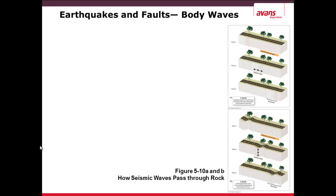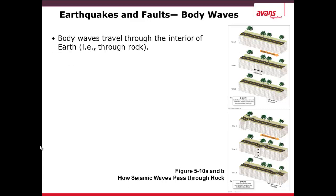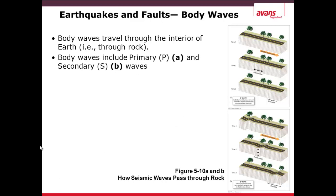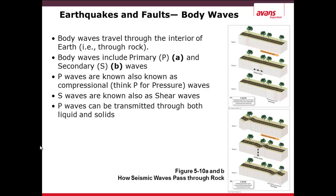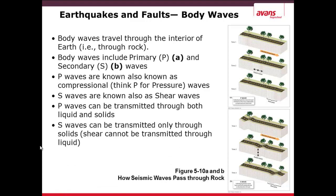Earthquakes generate different types of waves. Body waves travel through the interior of the earth rather than along its surface. These can be divided into P waves, which stands for primary, and S waves, which stands for secondary waves. A primary wave is compressional — the P can also stand for pressure — and it travels as a pressure wave through rock. S waves, also known as shear waves, travel more like a wave through water. However, P waves are transmitted through both liquid and solids, whereas S waves can only be transmitted through solids.